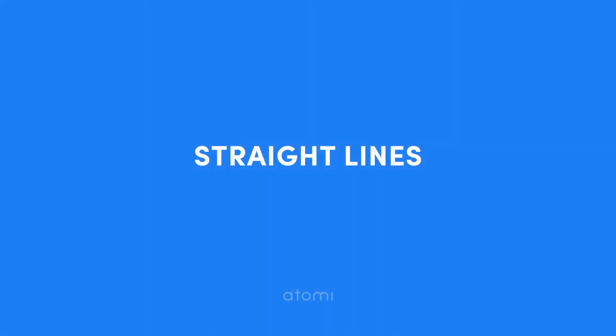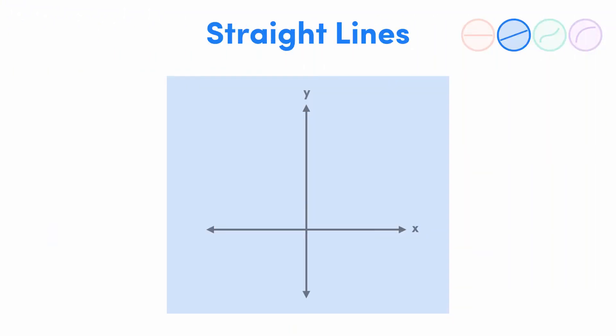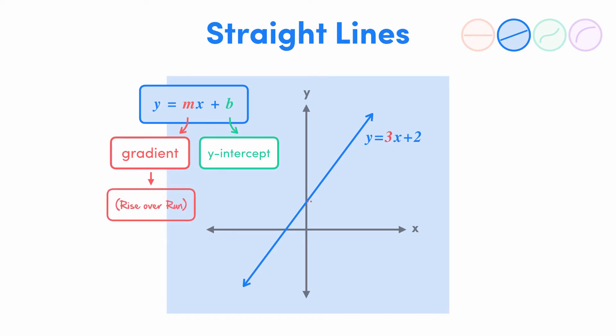Now, straight lines are not much of a step up. If a straight line is in the form y equals mx plus b, then m is the gradient and b is the y-intercept. For example, y equals 3x plus 2 has a gradient of 3, so remembering gradient is rise over run. This means it moves up 3 every time it moves along 1, and a y-intercept of 2 means it crosses the y-axis at y equals 2.